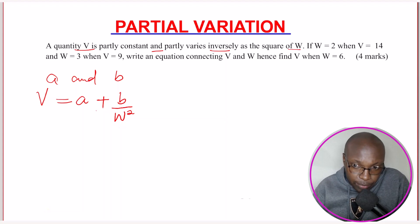Now after writing that, you can go to the next statement. If W = 2, W = 2 and V = 14. So V = 14. Just substitute. Then the constant will remain there. B, then W is 2. So W squared is 4.